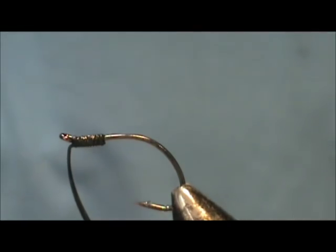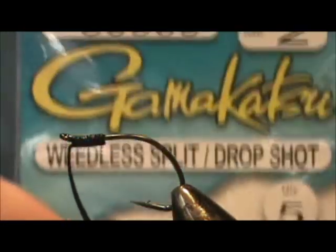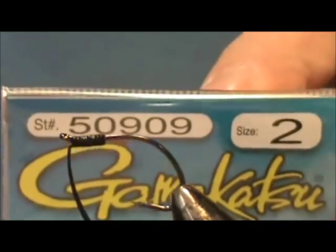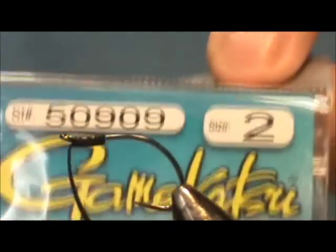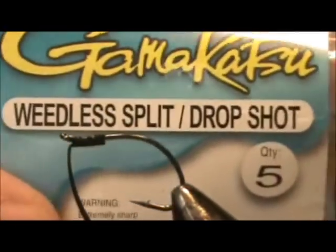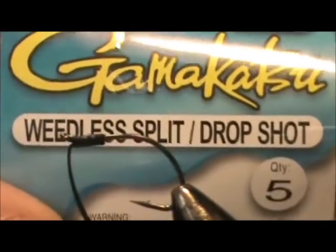Today I'd like to tie for you a weedless foam hopper. The hook I have in the vise is a Gamagatsu 50909. This is a size 2. It is a weedless split shot drop shot hook.